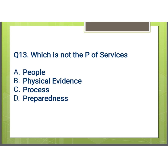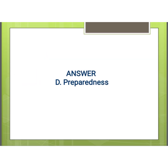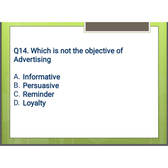Our next question is: which is not the P of services? Options are: A) people, B) physical evidence, C) process, and D) preparedness. And our answer is D, that is preparedness.